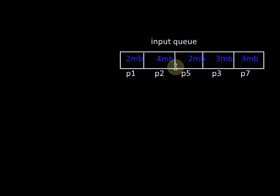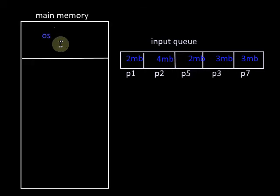In the main memory, a portion will be allocated or reserved for the operating system, and the remaining memory we have to allocate to the processes in the input queue.